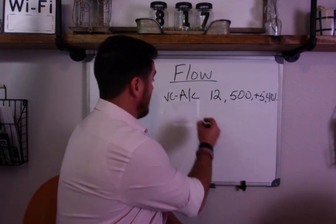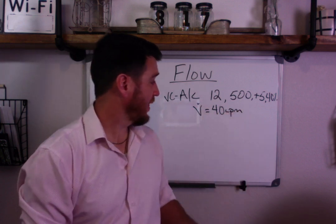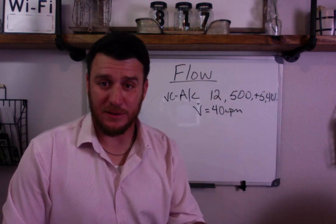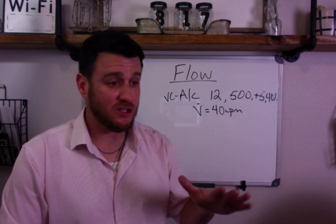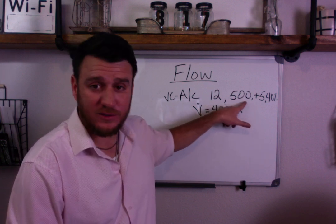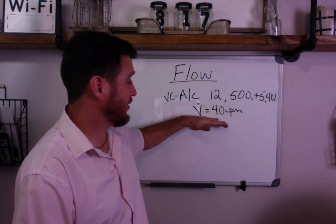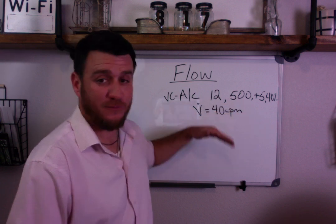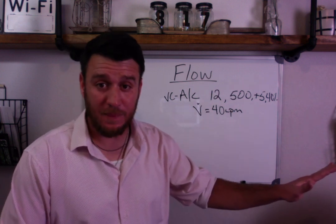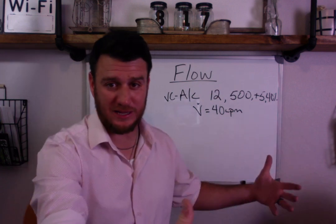Staying with the same example at 40 liters per minute — in volume control, flow also affects your inspiratory time, or I-time. The speed at which you give the gas determines how fast the total amount of gas is delivered. We're telling the vent to deliver 500 mLs at 40 liters per minute. The vent says give 0.5 liters at this speed. The faster you give it, the shorter your I-time will be. The slower you give it, the longer your I-time will be.